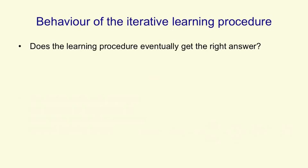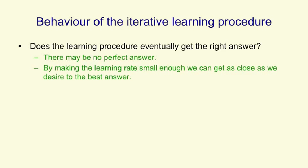Now we can ask how does this learning procedure, this delta rule, behave? Does it eventually get the right answer? There may be no perfect answer. It may be that we give the linear neuron a bunch of training cases with desired answers and there's no set of weights that'll give the desired answer. There's still some set of weights that gets the best approximation on all those training cases, minimizes that error measure summed over all training cases. And if we make the learning rate small enough and we learn for long enough, we can get as close as we like to that best answer.